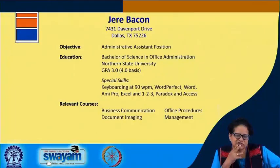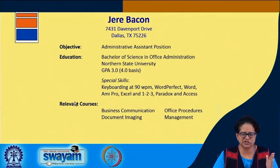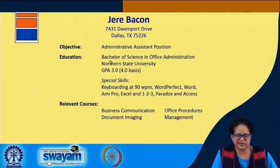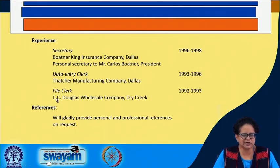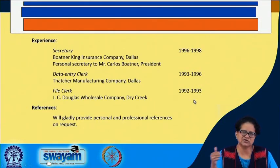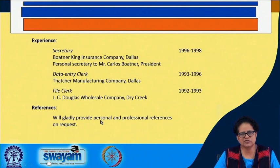Here we have a short CV of Jerry Bacon. The first part is his name, below that his address centered at the top, and in the left-hand corner you have Objective, Education, and Relevant Courses — in a very short few words the candidate has placed his education and relevant courses in context. In the experience section on the second half of the first page, there are various subsections: he was a secretary from 1996 to 1998, a data entry clerk from 1993 to 1996, and a file clerk from 1992 to 1993 — this is called reverse chronological order. His line regarding references states he will gladly provide personal and professional references on request. In certain situations you might require personal referees as well, so it is better to keep them handy.